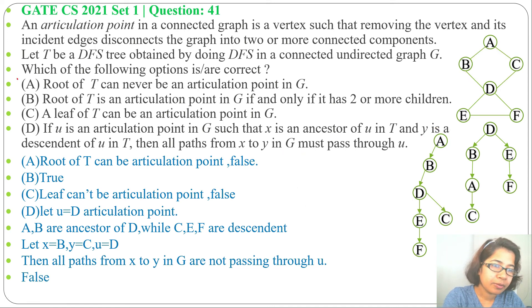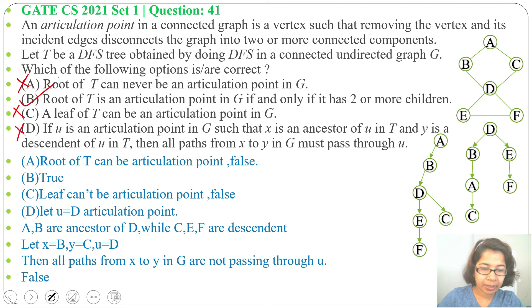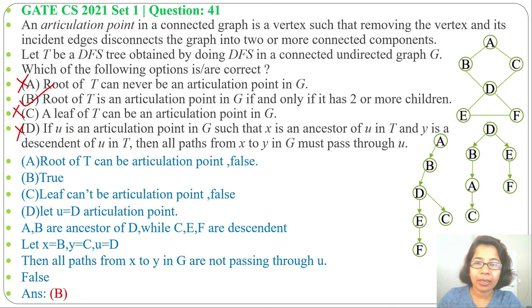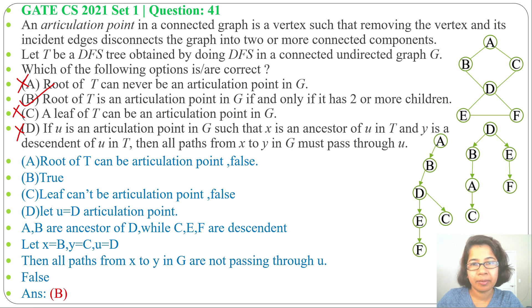So option A is false, option C is false, option D is false — only option B is correct. The answer is option B: root of T is an articulation point in G if and only if it has two or more children. If this lecture is helpful for you, please like and subscribe. Thank you.